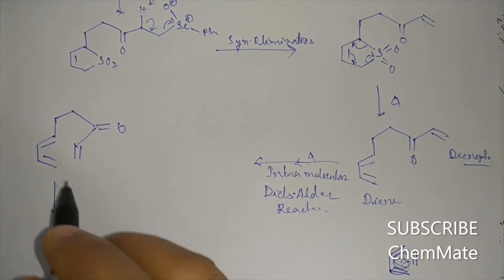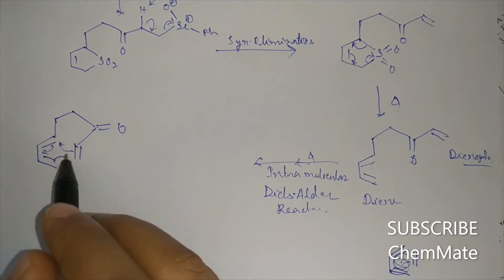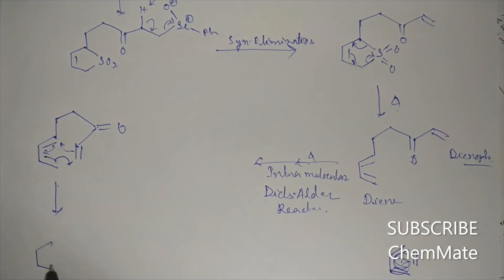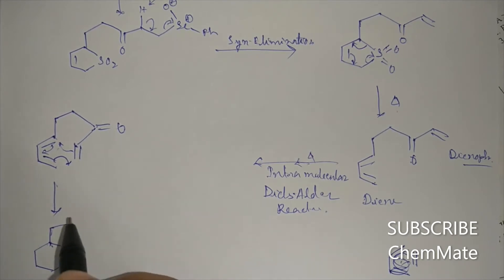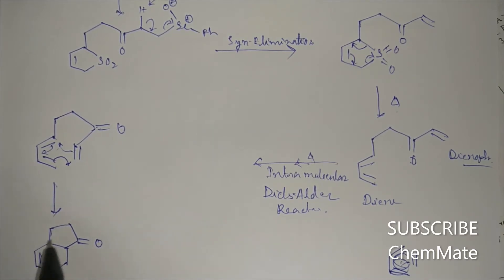So Diels-Alder reaction will happen, meaning a six-member and a five-member ring will be formed. Here the double bond, here will be the alkene.